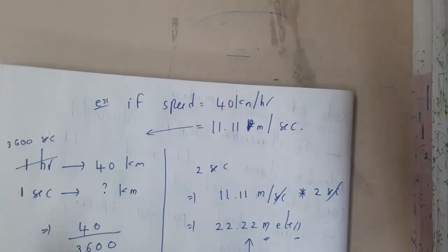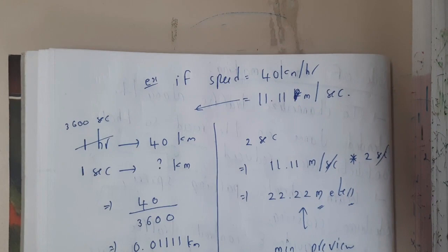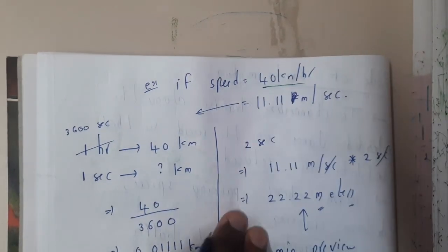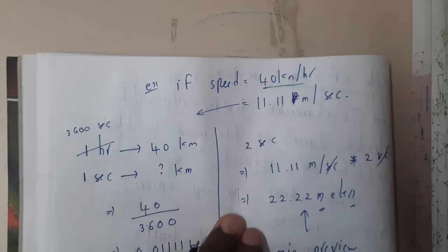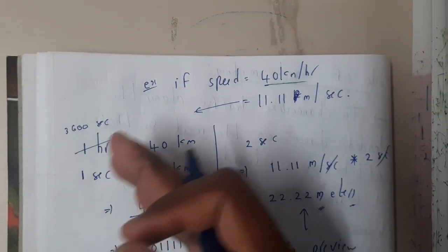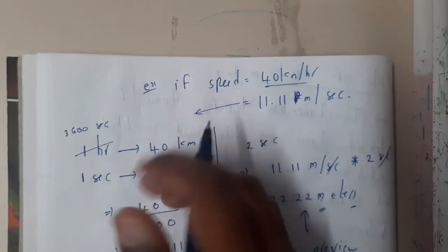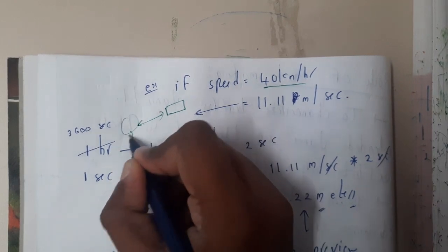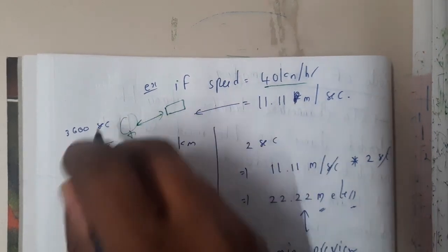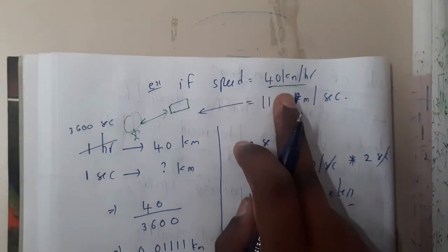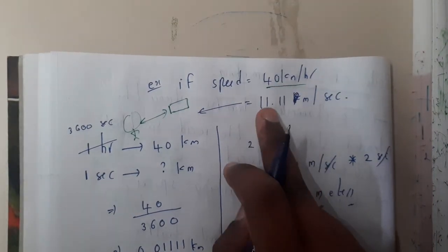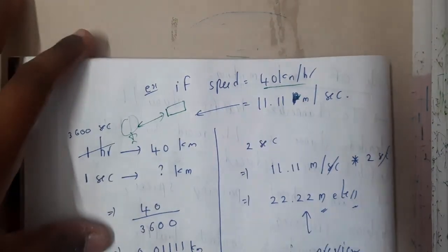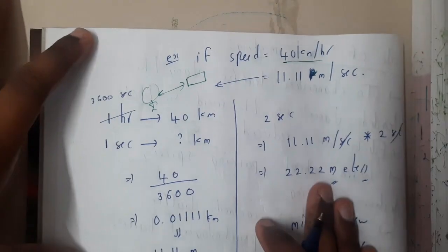Here I have solved a small problem, as some examinations may ask these kinds of problems. Assume your speed is 40 kilometers per hour, and we need to find the minimum preview distance — how far ahead you can observe a marking. We will be converting 40 km/h into meters per second.